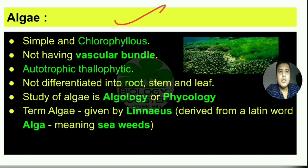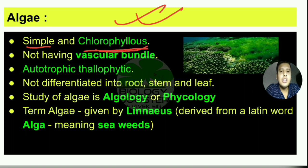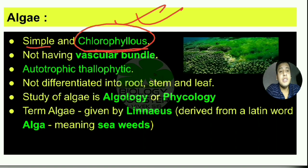The first thing about algae is they are simple and chlorophyllous — it means they are simple in structure and contain the green pigment called chlorophyll. Chlorophyll is a green pigment present in plants, and by the help of that pigment plants are able to make their own food. So algae are simple and chlorophyllous — they contain chlorophyll.